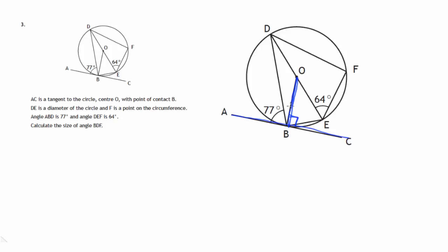As soon as we've got that, we can see that angle ABO must be a right angle, because ABC is a straight line. So there's 90, then another 77, and the remaining bit makes up another 90. Looking at angle DBO, it will be 90 minus 77, which gives us 13 degrees.